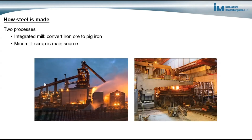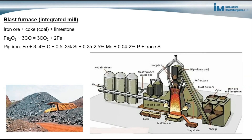There are two processes for making steel. One is steel made at an integrated mill and the other is steel made at a mini mill. With the integrated mill, iron ore is converted to pig iron, and at a mini mill, scrap is the main source. With an integrated mill, iron ore is put into the blast furnace along with coke and limestone. This reaction occurs and what's produced is pig iron — molten iron with a high carbon, high silicon, high manganese content, and also impurities.